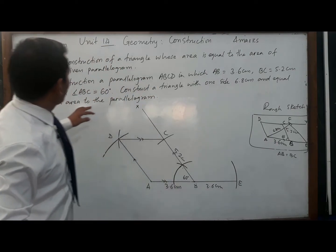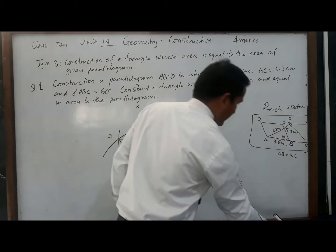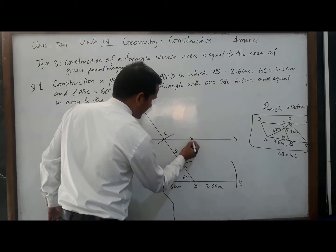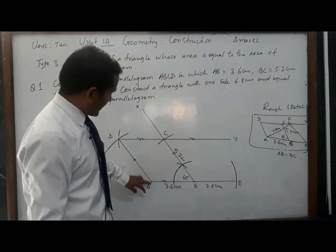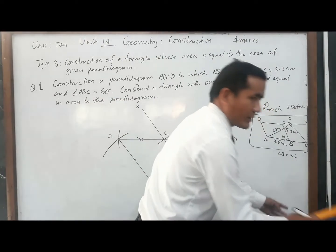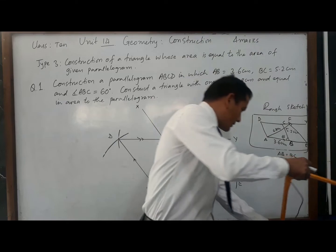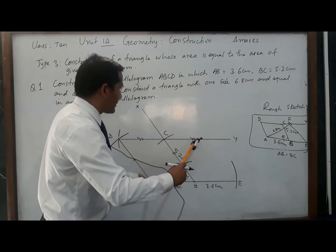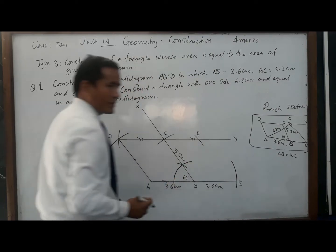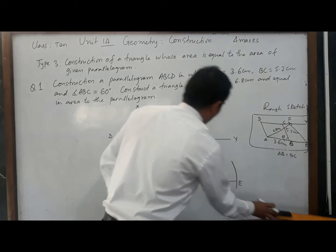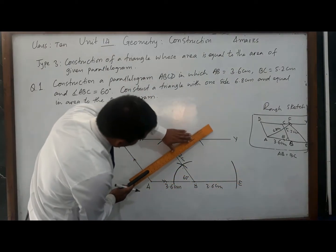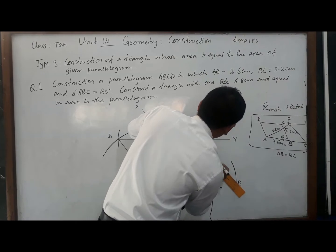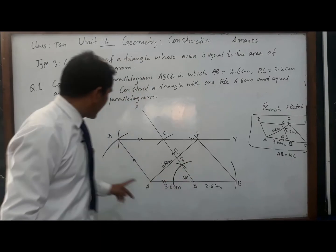One side of the triangle is 6.8 centimeters. For this, produce DC to Y such that DY is parallel to AE. Taking A as center, radius is 6.8 centimeters — measure with the help of a scale. Taking A as center, cut the line DY at F, give the name F. Now join AF and EF. Here we got triangle AEF whose area is equal to the area of parallelogram ABCD.